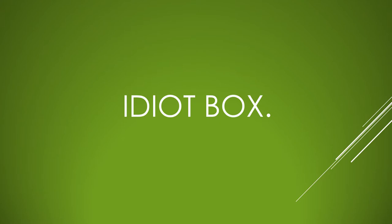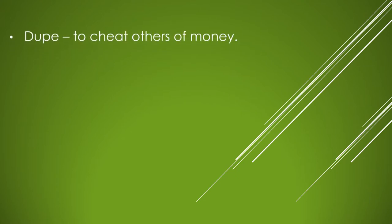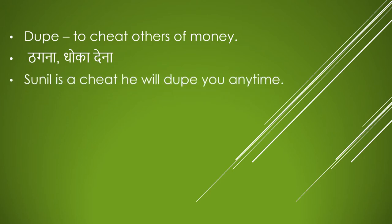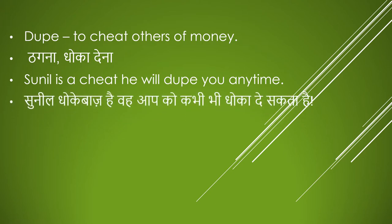Friends, what do you know? Who is the idiot box? I will give you the answer at the end of the video. Today's word is 'Dupe' — to cheat others of money. Sunil is a cheat. He will dupe you anytime.